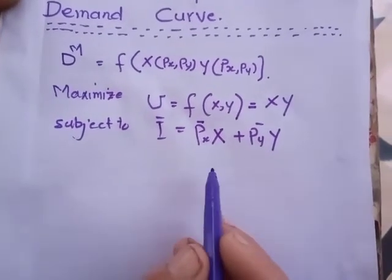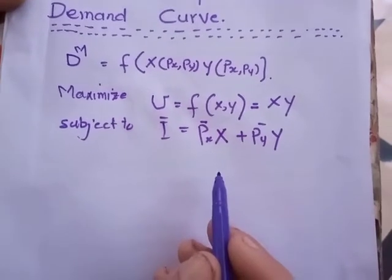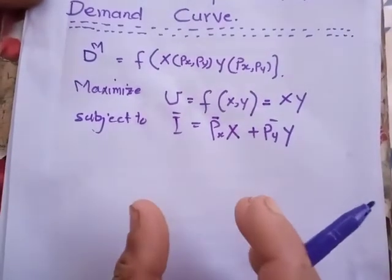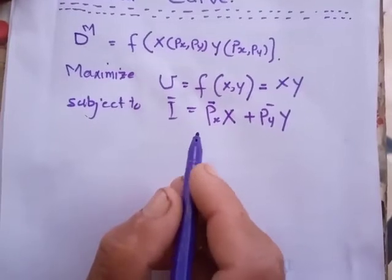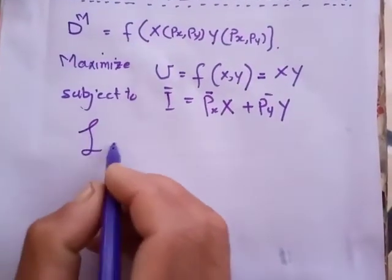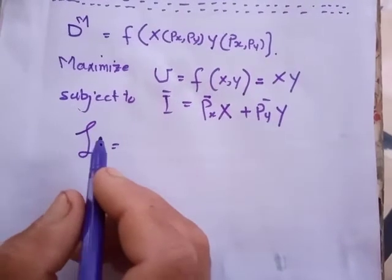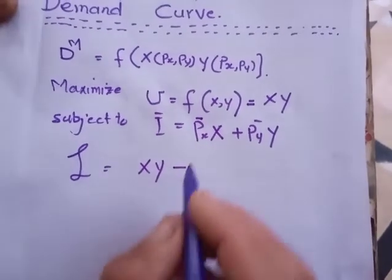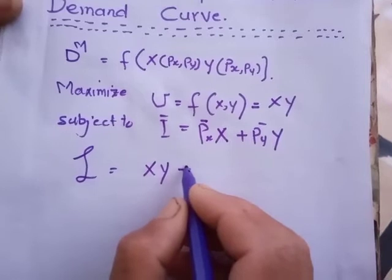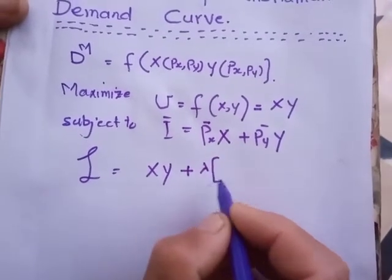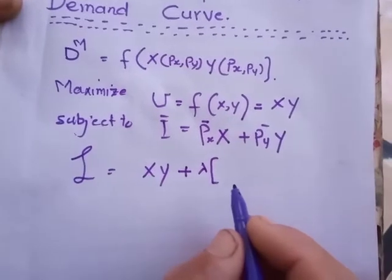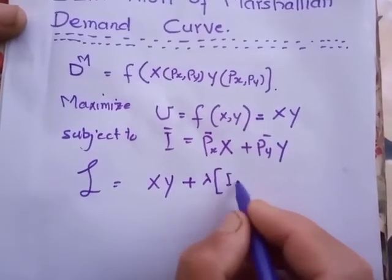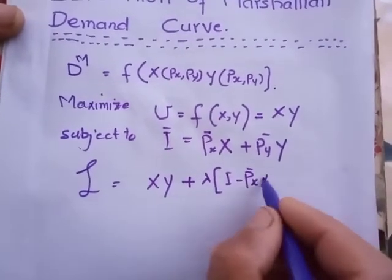For optimization purpose, here we use constraint optimization technique. In this technique, we turn these two functions into a composite function and call that lambda. Lambda is equal to xy plus lambda, where lambda is the Lagrangian multiplier. It acts as a link variable: I minus Px times x minus Py times y.